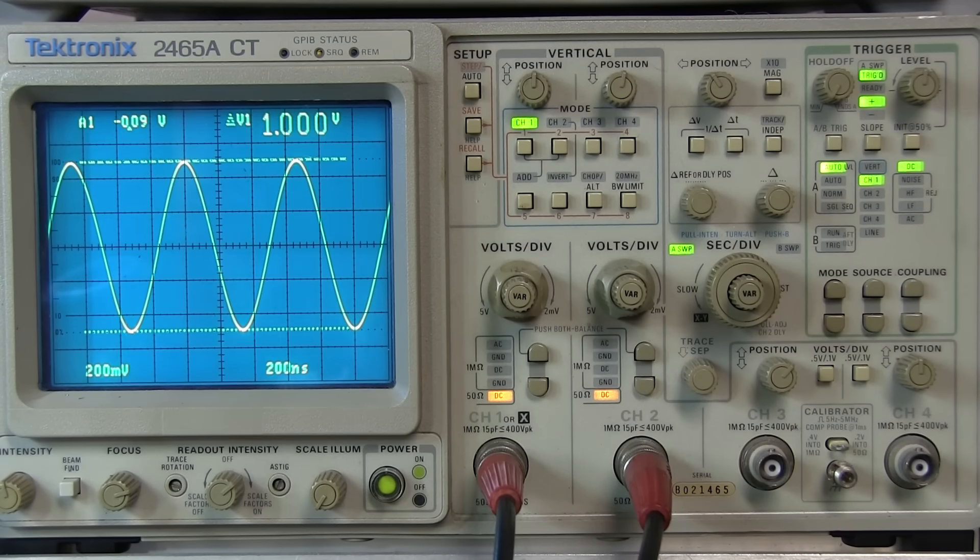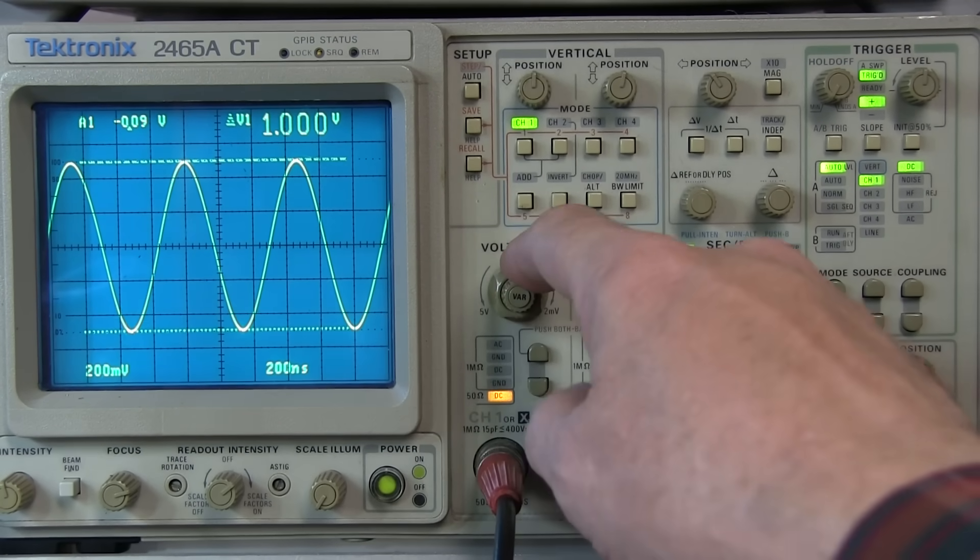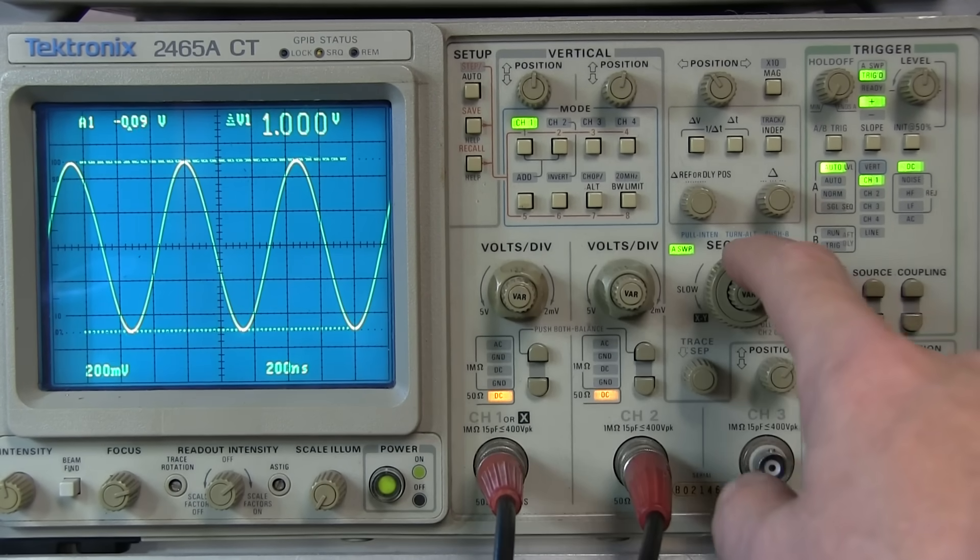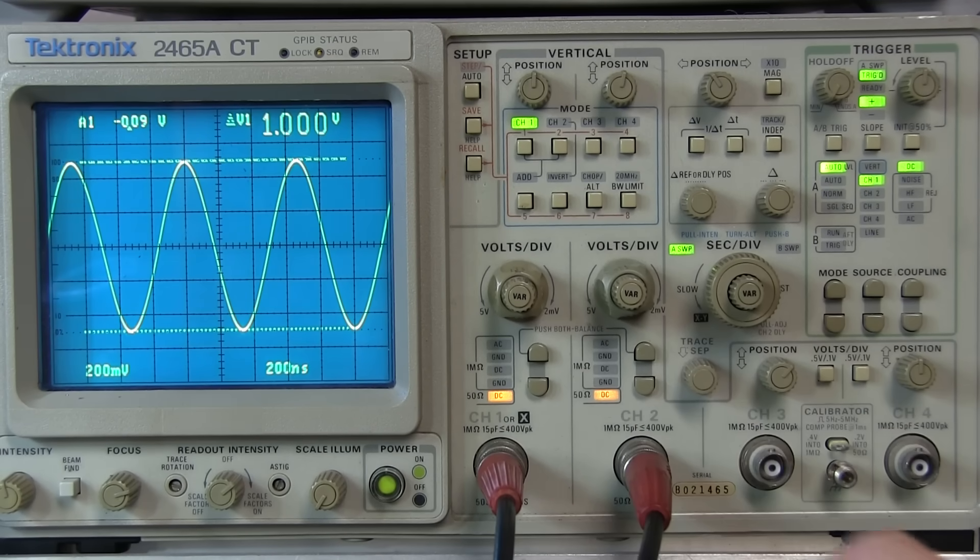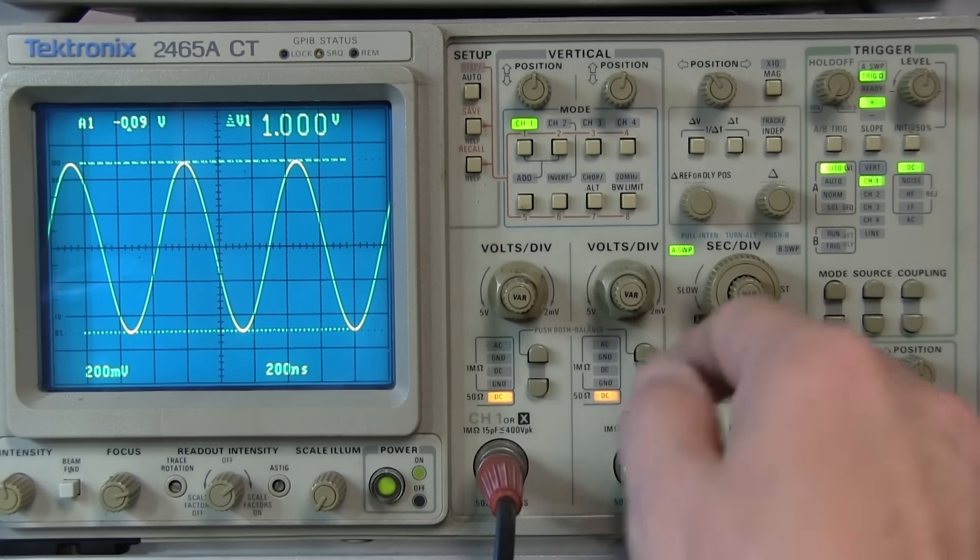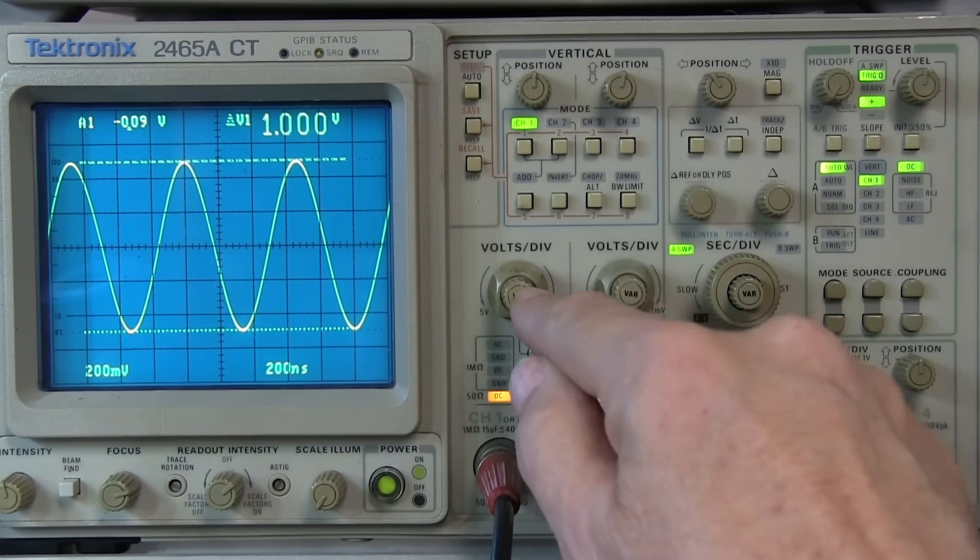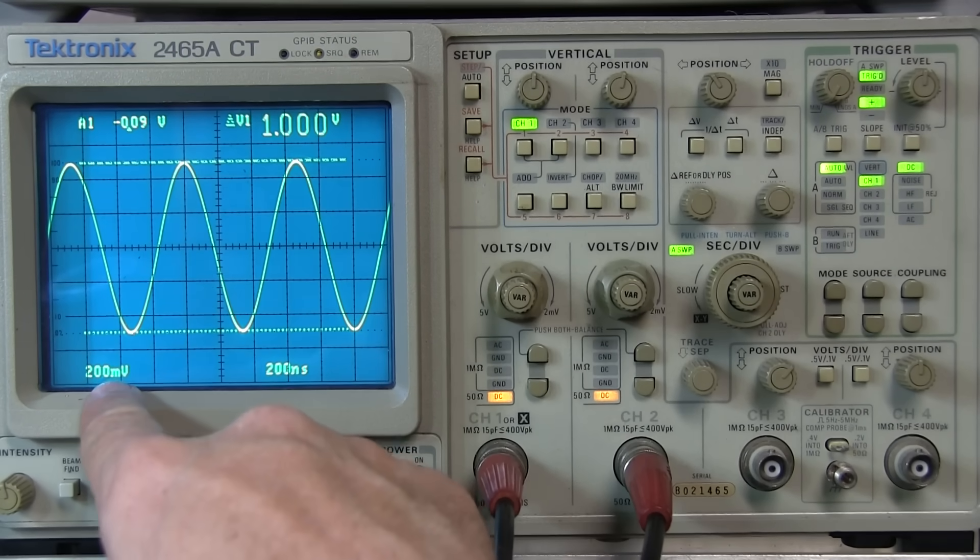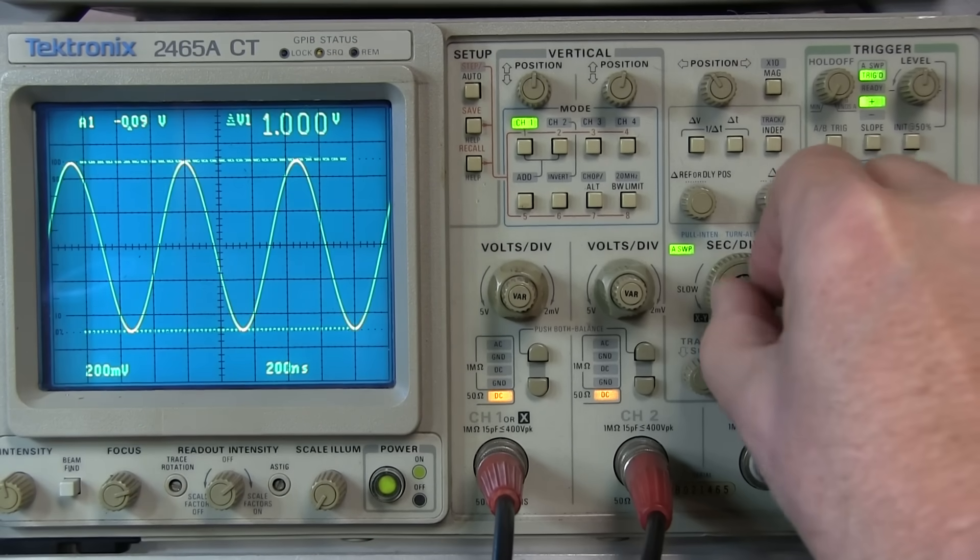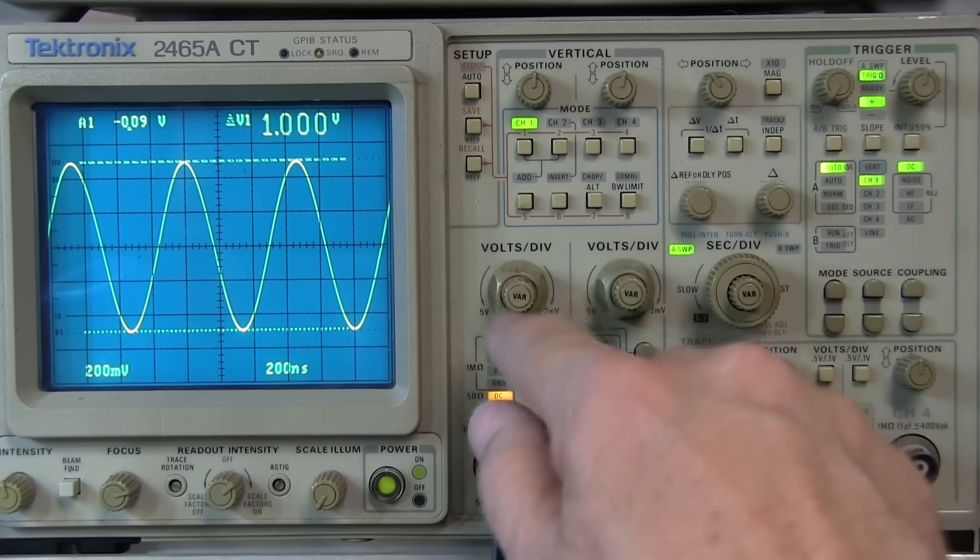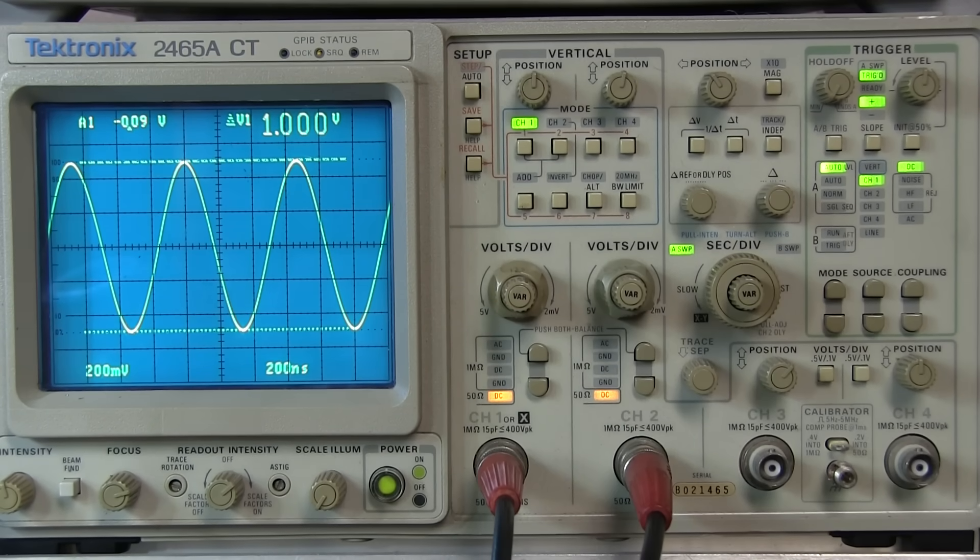So now let's take a look at the lesser known cursor functions. And these occur when the vertical settings or the horizontal settings are not in their locked calibrated positions. What I mean by that is these VAR knobs normally will be fully clockwise in their kind of detented position so that we get an accurate and calibrated vertical scale or accurate and calibrated horizontal scale. In those cases where you're not locked in that calibrated position, the cursors take on their new functionality.